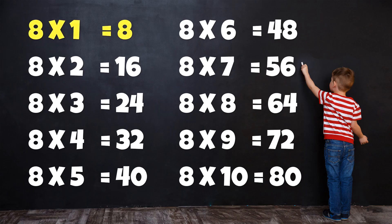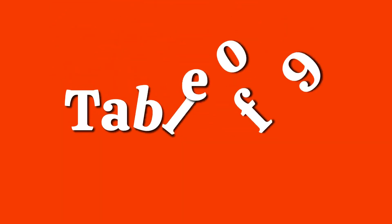Table of 8: 8×1=8, 8×2=16, 8×3=24, 8×4=32, 8×5=40, 8×6=48, 8×7=56, 8×8=54, 8×9=72, 8×10=80.